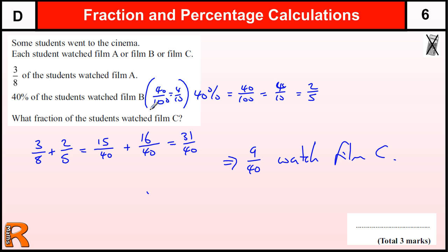If we know it's four out of ten, and we've got three out of eight students watched film A, if we make it out of 80 students, for example, because we know eight and ten go into 80, so we have 80 students.